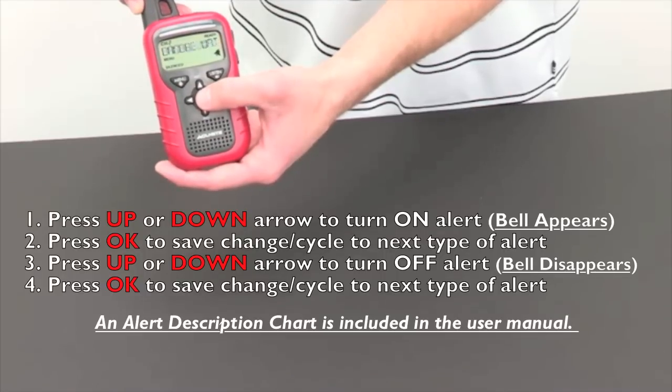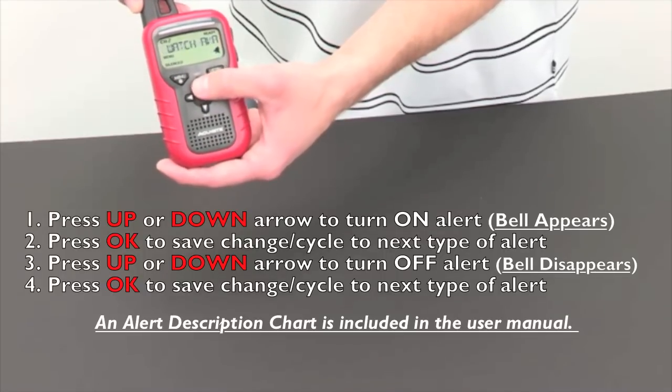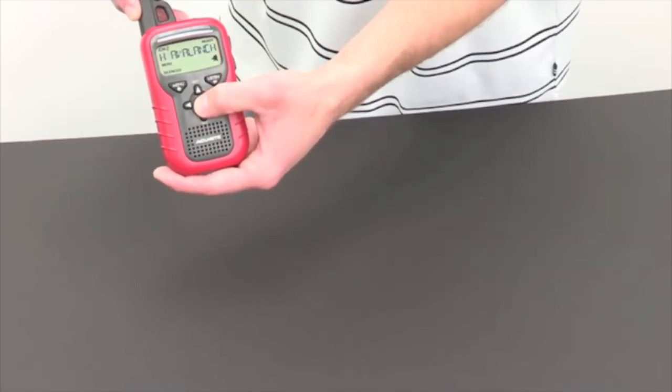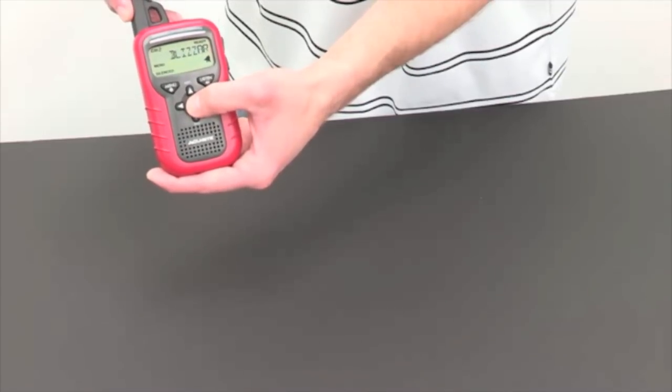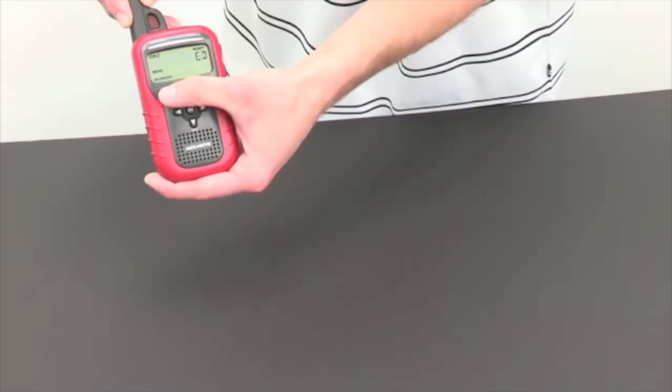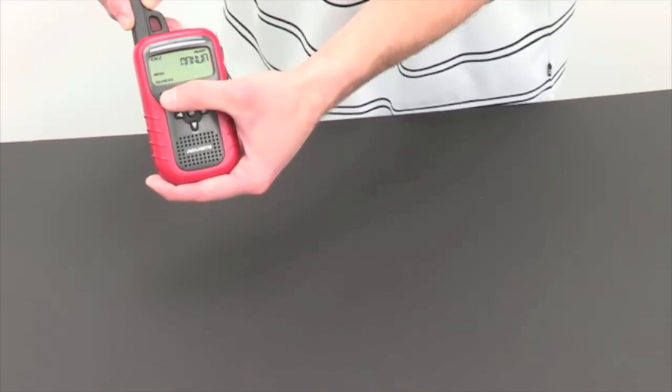If you would like to remove an alert that you have added, simply press the up or down arrow. After you have made your changes for which alerts you would like to receive, press the menu button to navigate back to the home screen.